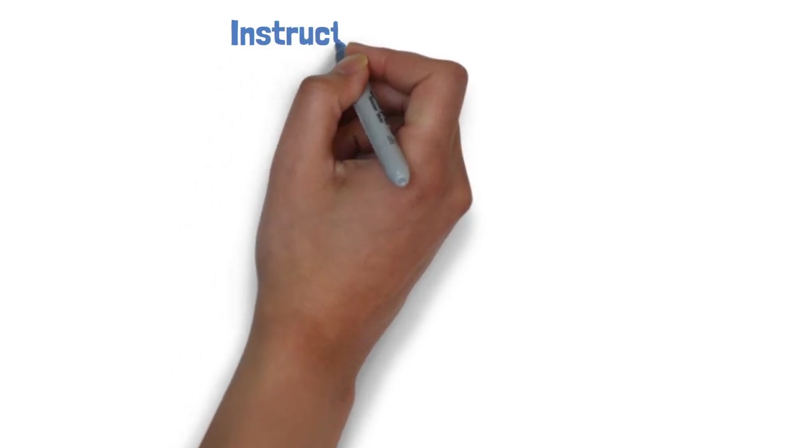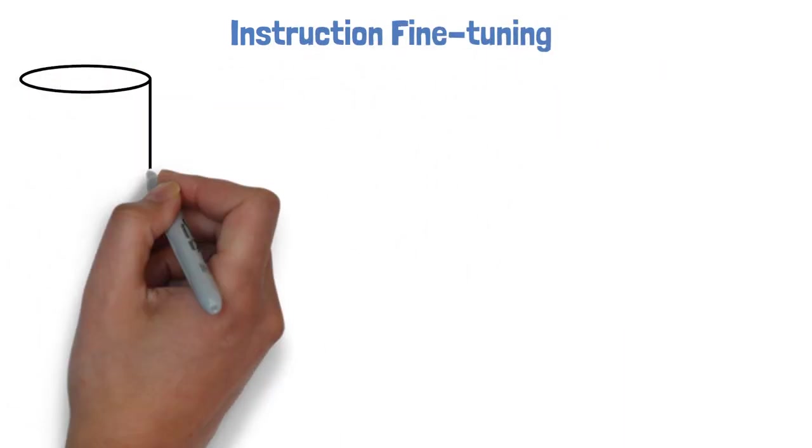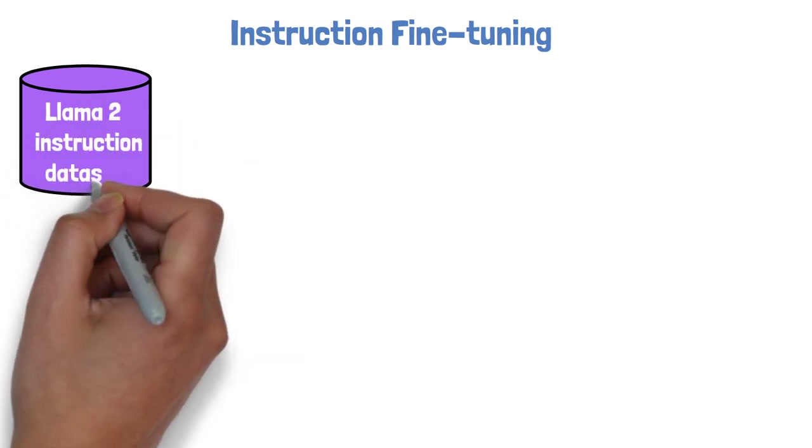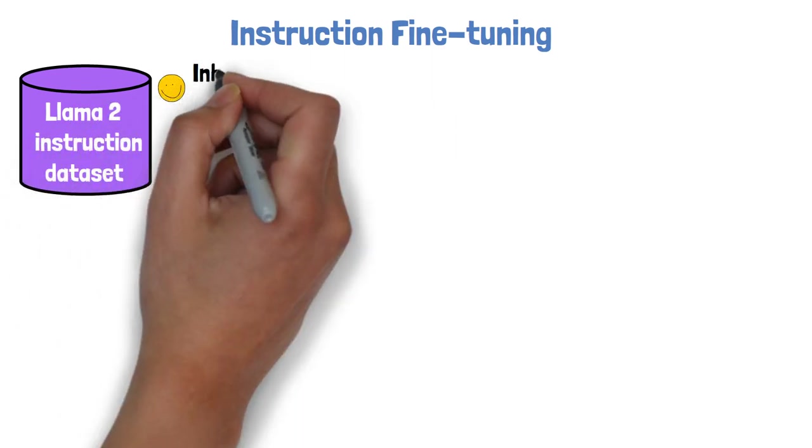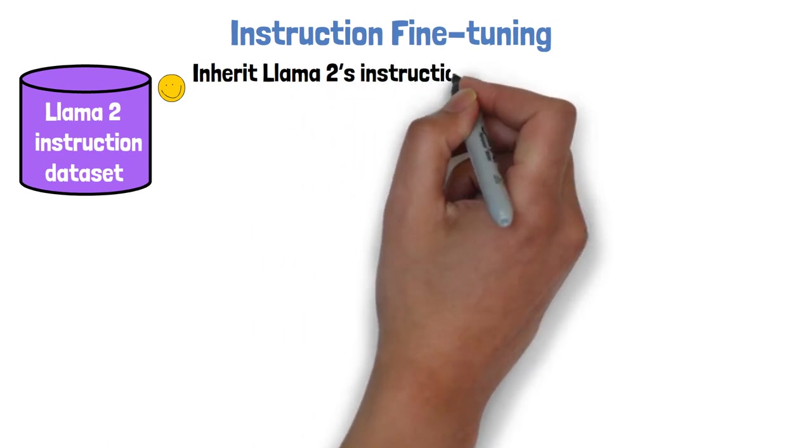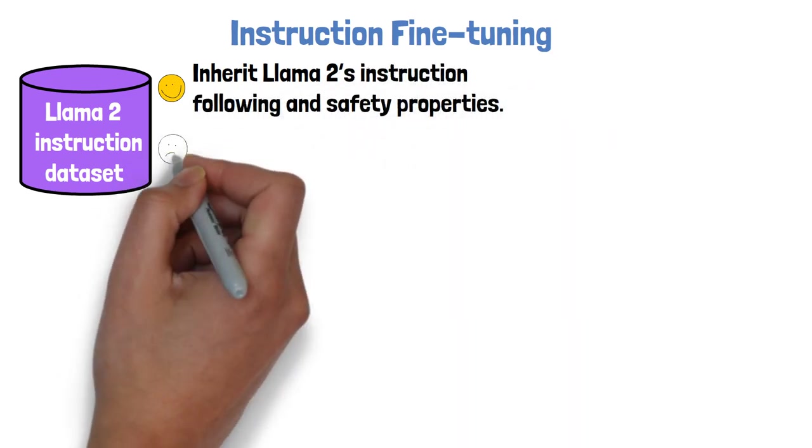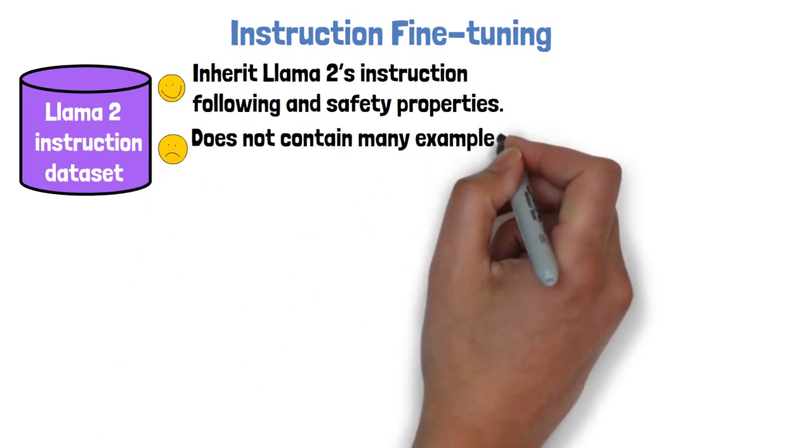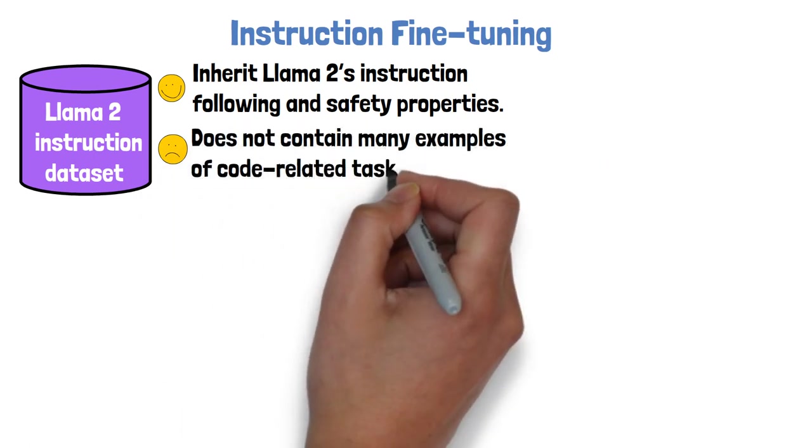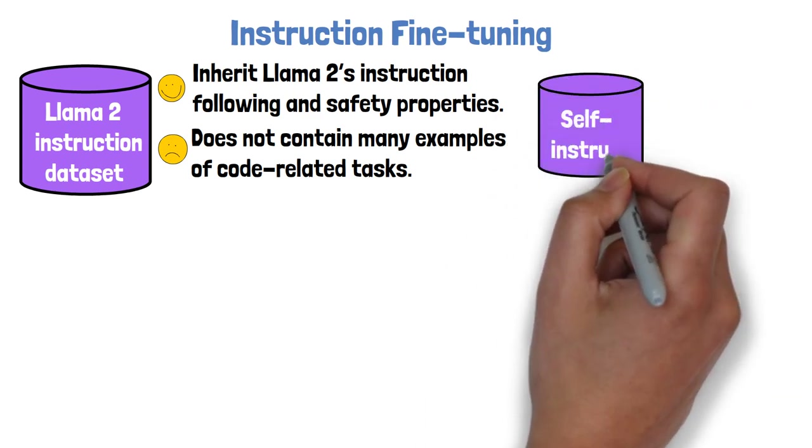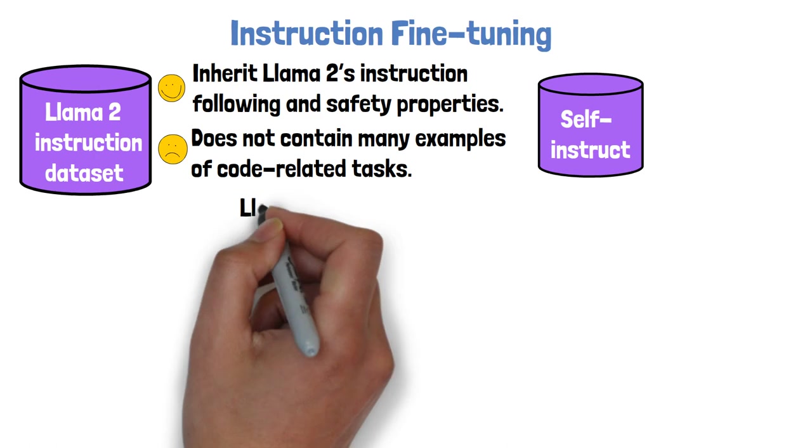In the instruction fine-tuning step, we use three datasets. The first is the same dataset that was used for instruction tuning of Llama 2. This helps CodeLama Instruct to inherit Llama 2's instruction-following and safety properties. However, this dataset does not contain many examples of code-related tasks. For this, we have the second and most interesting dataset, which is created using self-instruct method. What does self-instruct mean?